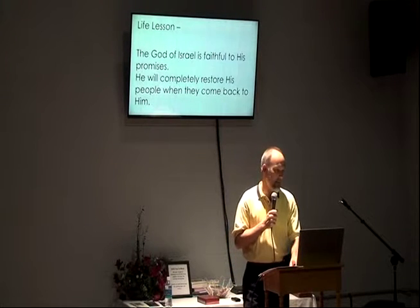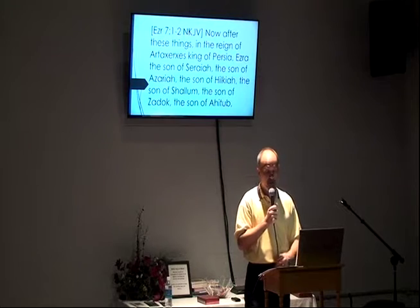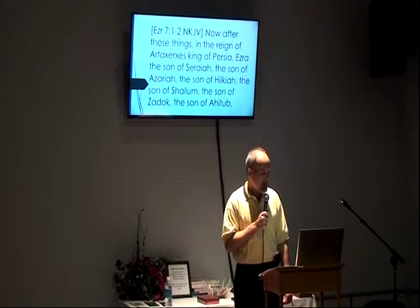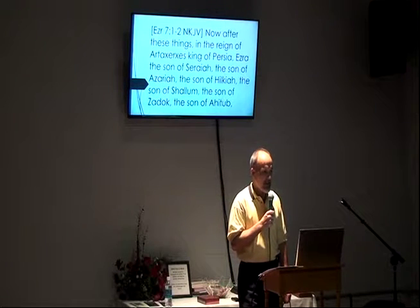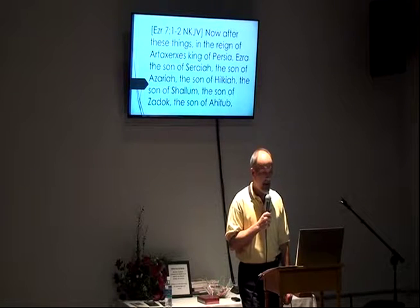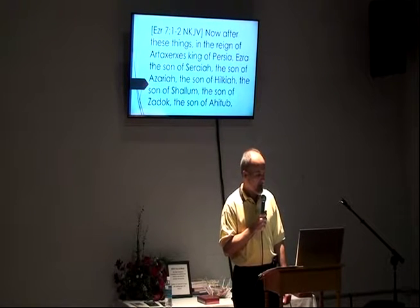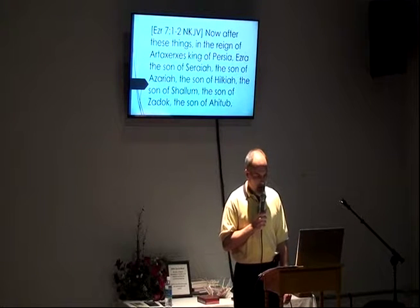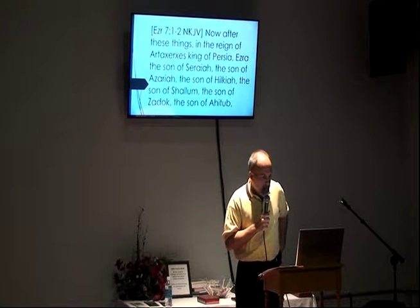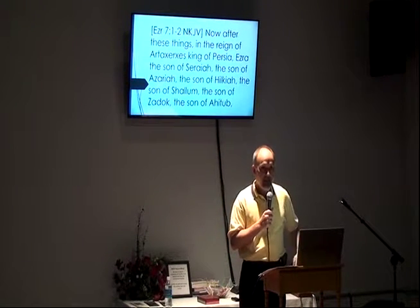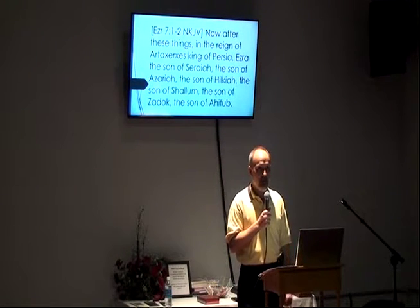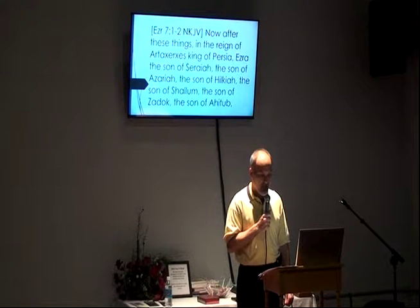Getting into Ezra chapter 7, verse 1 and 2: 'Now after these things, in the reign of Artaxerxes king of Persia, Ezra the son of Saraiah, the son of Azariah, the son of Hilkiah, the son of Shallum, the son of Zadok, the son of Ahitub.' Here is the first mention of Ezra — the namesake of this whole book. We have not heard from him at all through chapters 1 through 6.